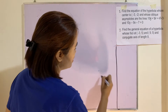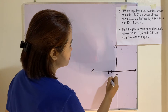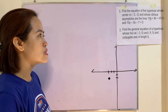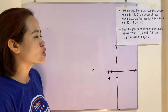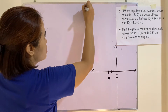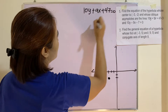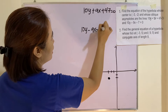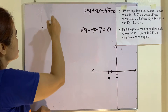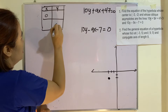Let us illustrate the problem first. The center is at negative 3, negative 2. We do not know yet the transverse axis — whether it is parallel to the x or parallel to the y — but we can determine it by graphing the two equations. I will be finding the x and y intercepts, letting x equal 0 and y equal 0.